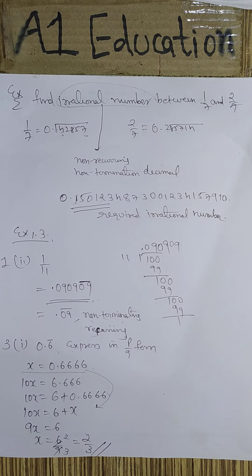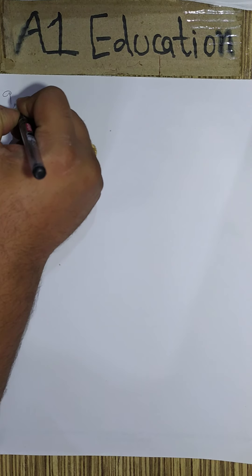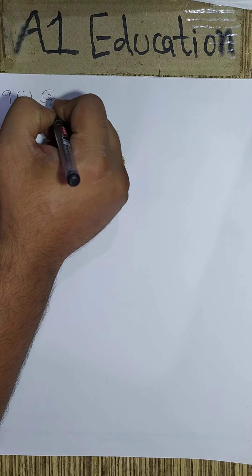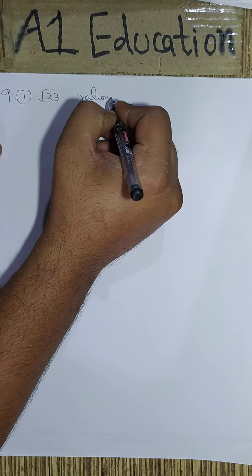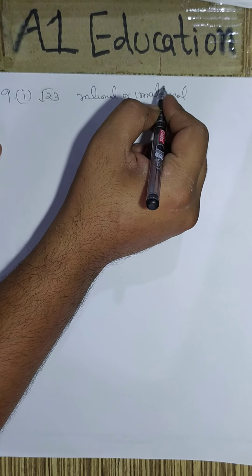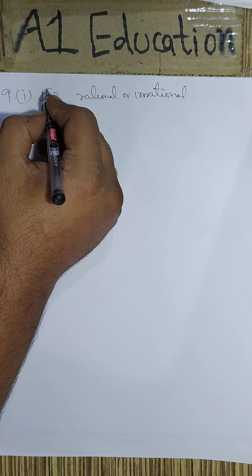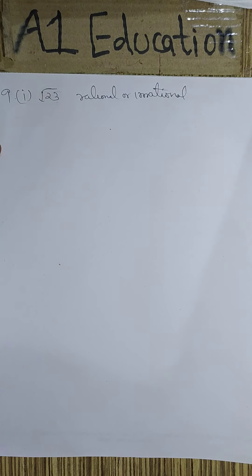There is one more question in the same exercise which asks whether square root of 23 is rational or irrational. In order to identify whether it is rational or irrational, we have to find out the square root of 23. We get 4.7958315231272.